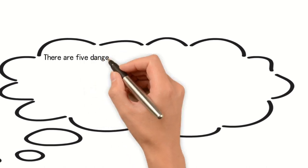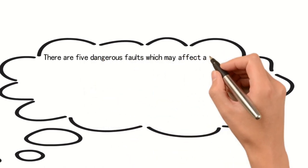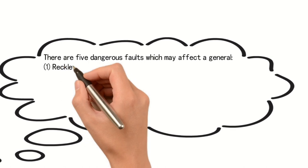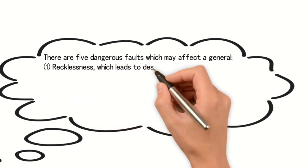There are five dangerous faults which may affect a general. First, recklessness, which leads to destruction. Second, cowardice, which leads to capture.